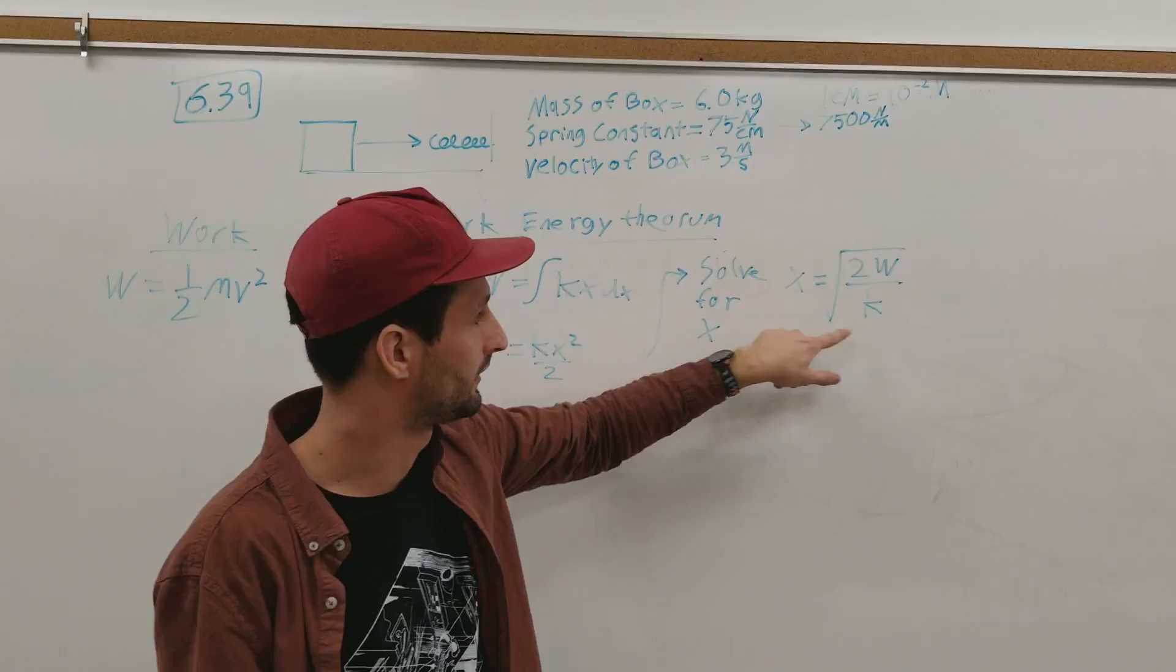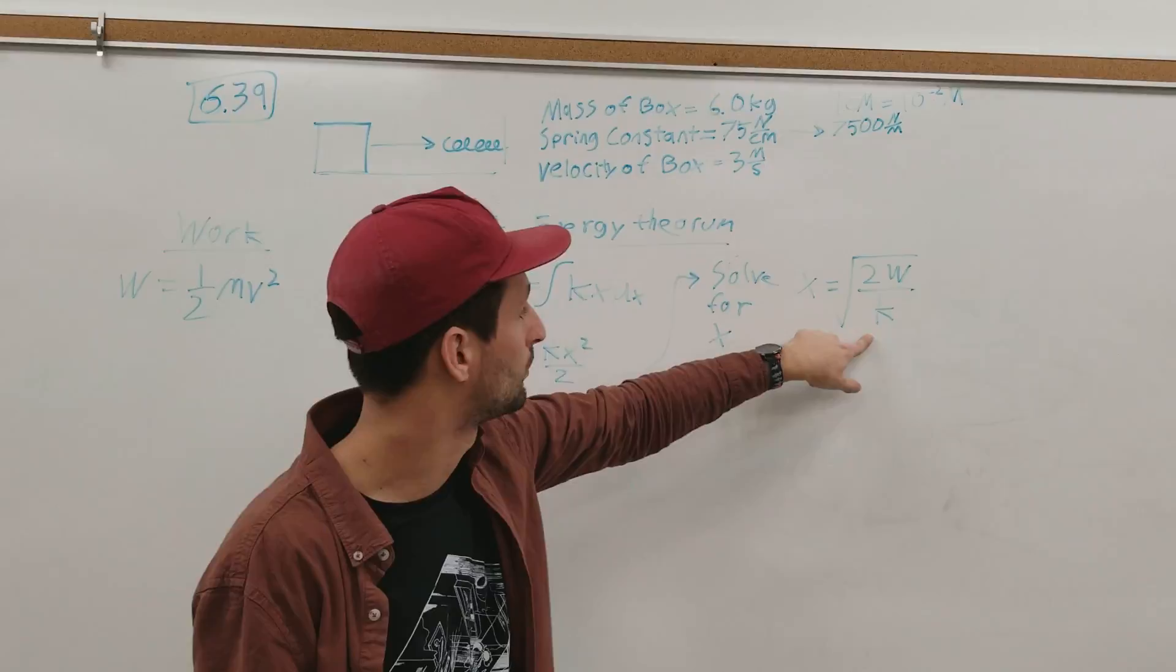So the first thing you do is you're going to want to get the work. We know that work equals one-half mv squared. So we plug in these values.